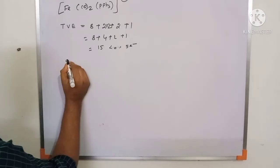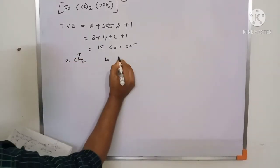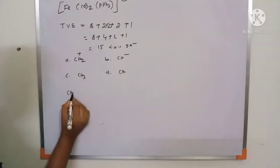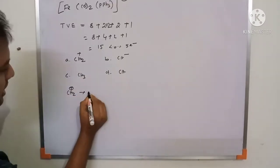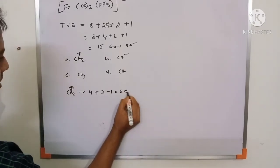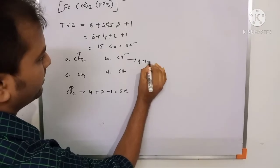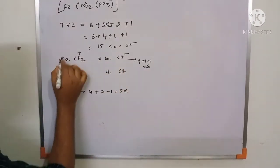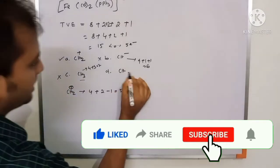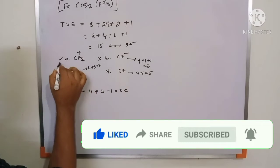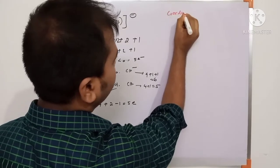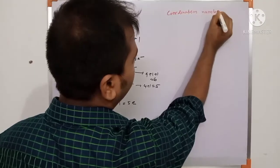Checking the options: CH₂⁺ has carbon 4 + 2 hydrogen − 1 (positive charge) = 5 electrons. CH⁻ has 4 + 1 + 1 = 6 electrons. CH₃ has 4 + 3 = 7 electrons, not 5. CH has 4 + 1 = 5 electrons. So either A or D could work based on electron count alone. We use the coordination number method to distinguish: coordination number 6 is isolobal with CH₄, coordination number 5 with CH₃, coordination number 4 with CH₂, coordination number 3 with CH.